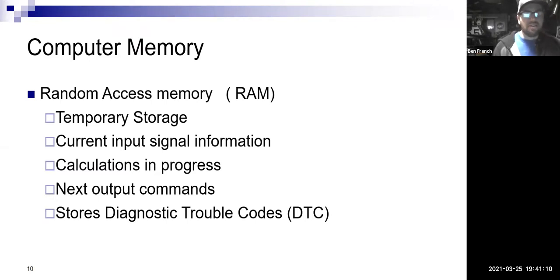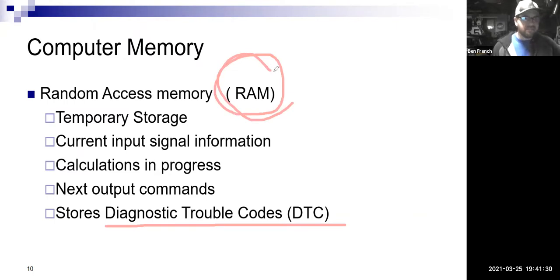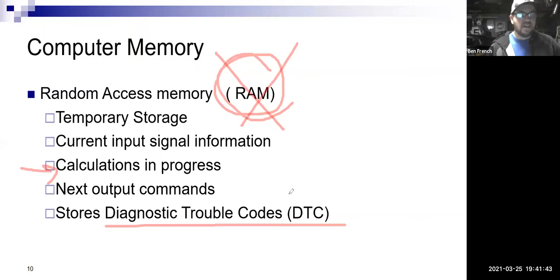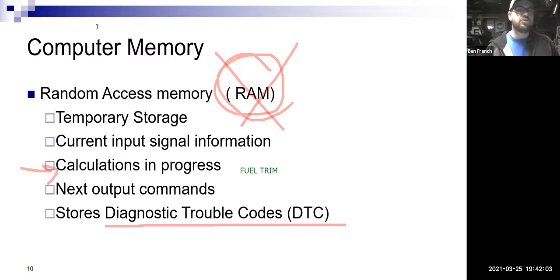On computer memory: just like your personal computer at home has RAM and ROM and all that stuff, we have this in our vehicle computers. Our diagnostic trouble codes — DTCs — are stored in the RAM. That's why if you disconnect the battery for long enough, you can wipe out that RAM and lose those codes. What else is in RAM? Calculations, output commands — and I'll add fuel trim: how much compensation am I giving the fuel system based on feedback from the oxygen sensor. Those types of things are stored in the RAM.